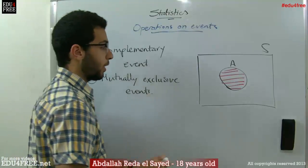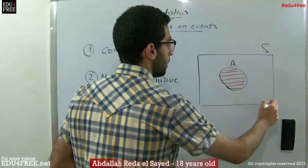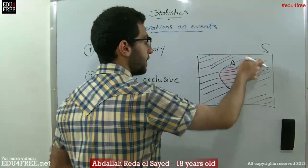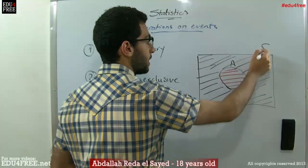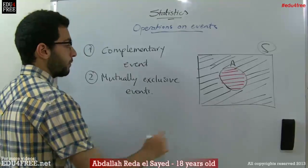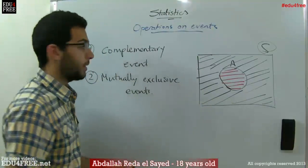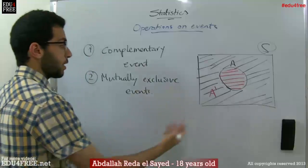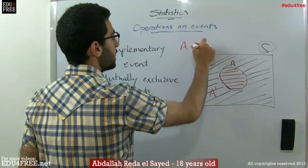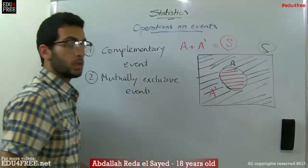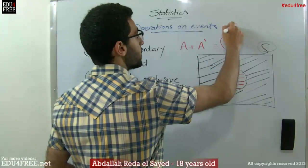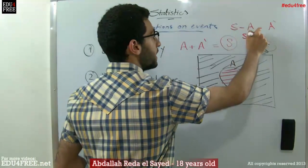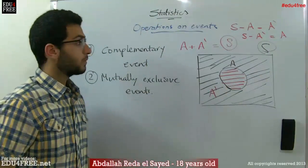We still have this bigger part that's included in here. We can notice that if we add this part to this part, it will give us the sample set S. We refer to this part as the complementary event of A, denoted as A dash. We can conclude that an event plus its complementary event yields the sample set. In other words, the sample set minus the event gives its complementary event, or the sample set minus the complementary event gives the event.